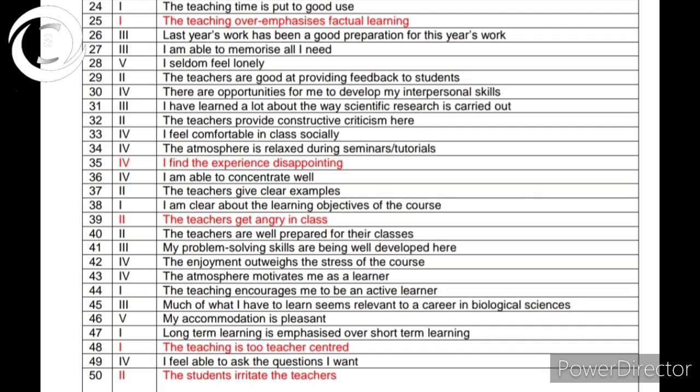The five-point Likert scale means students have five choices: strongly agree has four marks, agree has three marks, neutral has two marks, disagree has one mark, and strongly disagree has zero marks. The maximum score, if a student marks all questions as strongly agree, is 200.